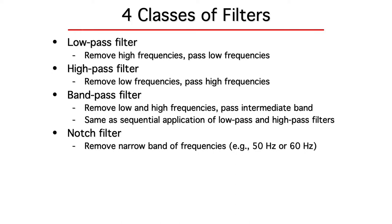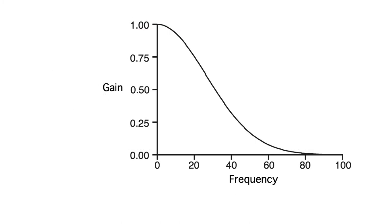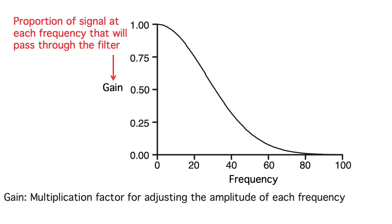Filters are often described in the frequency domain by showing the frequency response function. The x-axis is frequency, and the y-axis is gain, which goes from 0 to 1. The gain indicates the proportion of the signal that the filter passes for a given frequency. A gain of 0 means that the frequency is completely blocked. A value of 1 means that the frequency is completely passed. And a value of 0.75 means that the frequency is reduced to 75% of its original strength.